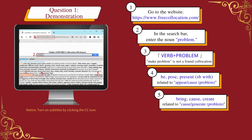Question one demonstration: one, go to the website; two, in the search bar enter the noun 'problem'; three, observe the verb plus problem section and find that 'make problem' is not a found collocation, confirming it is not correct; four, look for collocations with similar meanings, such as be, pose, and present somebody with, which are related to appearance; five, find bring, cause, and create, which are related to causing or generating a problem. We can then use these verbs to express similar meanings — for example, 'create a problem'.